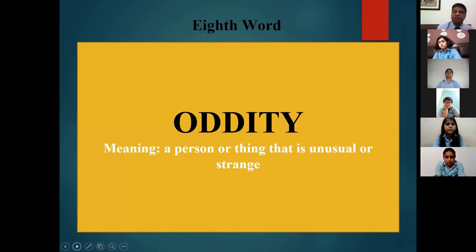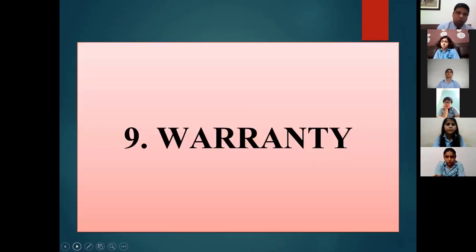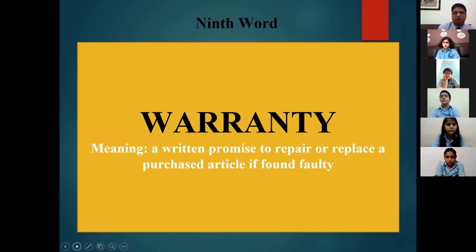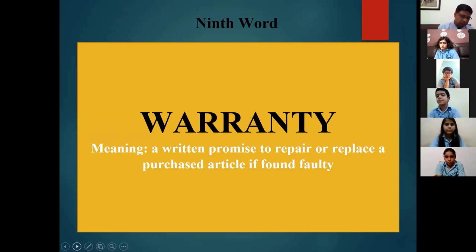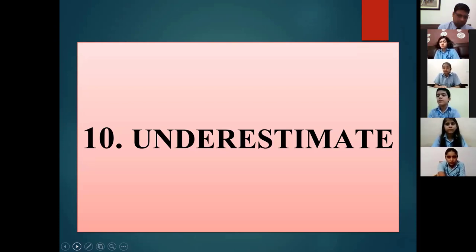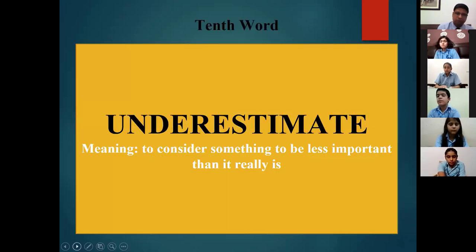Word nine goes to Nishtha Kumar Rana: 'Warranty' — he answers 'a written promise to repair or replace a purchased article' — correct. Word ten goes to Vanshika: 'Underestimate' — she answers 'to think something to be less important than it really is' — correct. It means to consider something or somebody less important than they actually are.